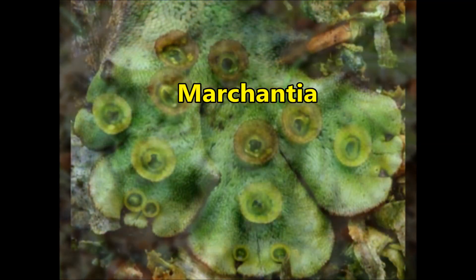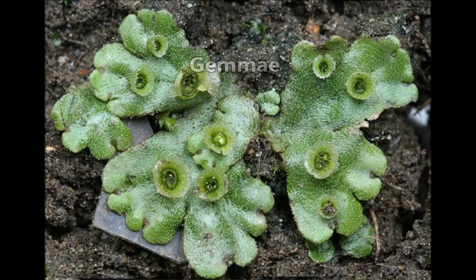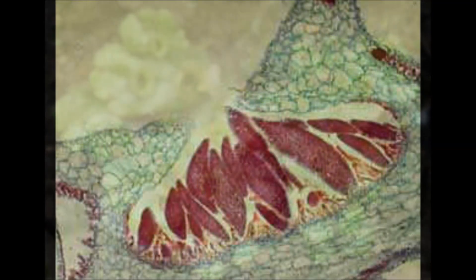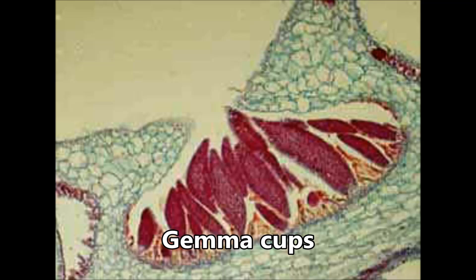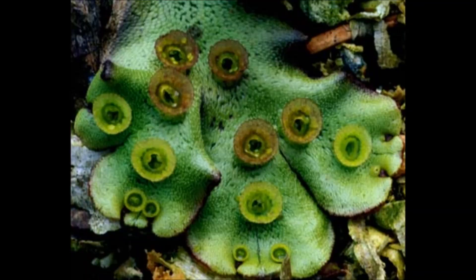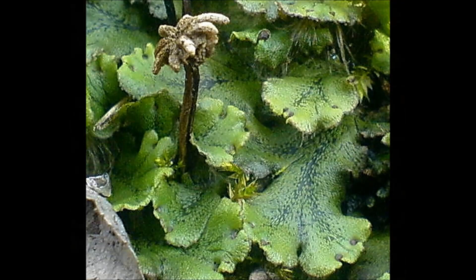Marchantia — Asexual Reproduction: Asexual reproduction occurs by fragmentation and by gemmae. Marchantia produces special structures on their dorsal surface called gemma cups. Gemma cups give rise to very tiny, lens-shaped bodies called gemmae. The gemmae become detached from the parent body and germinate to form new individuals.